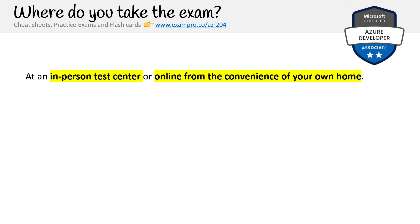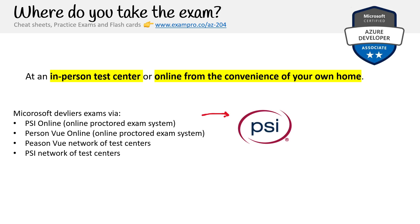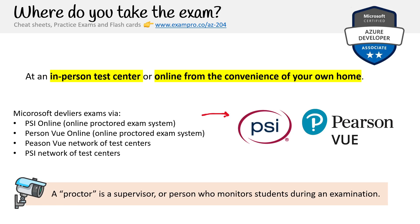Where do you take the exam? You can do it in person at a test center or online from the convenience of your own home. Microsoft delivers exams via two providers: PSI Online and Pearson VUE. Both are online proctored exam systems and both have their own test center networks. I strongly recommend going in person if you can — it's less stressful. If you can't, both options are more or less the same. I like Pearson VUE, but some people prefer PSI. If you're wondering what 'proctor' means — it means there's a supervisor monitoring you as you take the exam to make sure you're not cheating, ensuring these are legitimate scores.